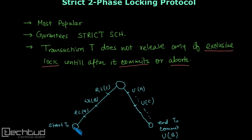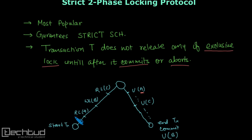If we draw this with a diagram, the transaction starts and begins acquiring locks — this is the growing phase. After this growing phase, when unlocking starts — the shrinking phase — only those items which were locked with a read lock, that is a shared lock, are released or unlocked.